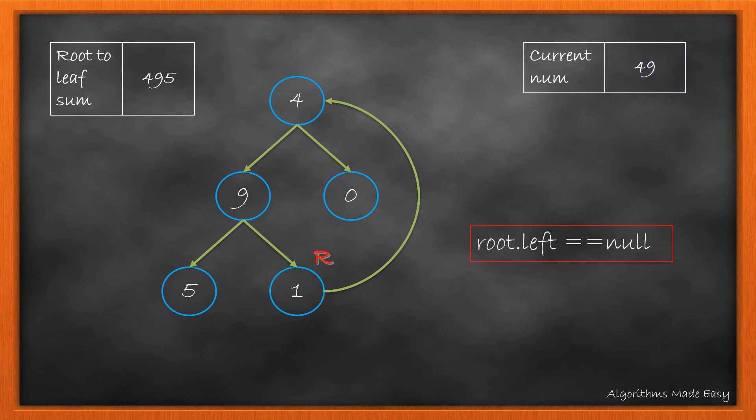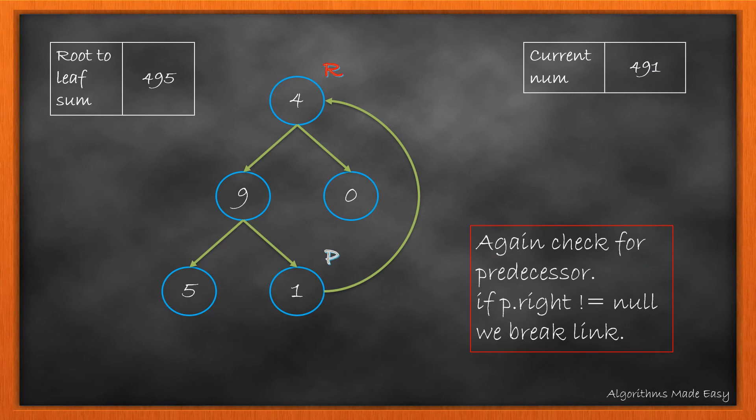As left is null, we update current number and update root to right. We again check for its predecessor. At this time the predecessor has a link, so we break it. Also we add current number to root to leaf sum and update the current number too. Now we move root to right.